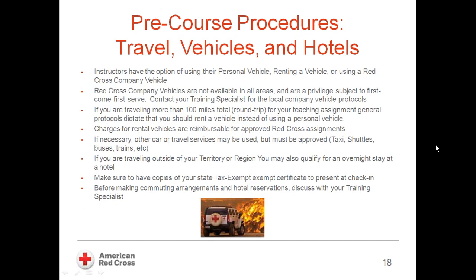Travel plans should be made well in advance to create the most cost-effective arrangement. Some Red Cross chapters have company vehicles that can be borrowed for business travel. For travel expected to be more than 100 miles round trip, you can make arrangements for a car rental. If you use your personal card to pay for a car rental, you can submit the charge for reimbursement. There are special cases where we use alternative forms of transportation such as a taxi, train, bus, shuttle, or car service.